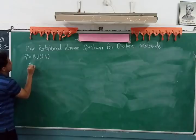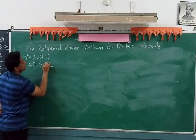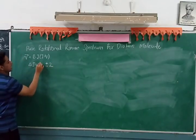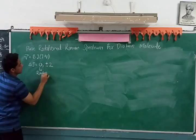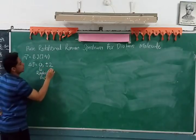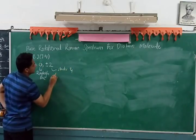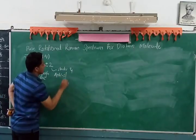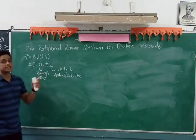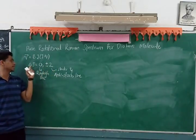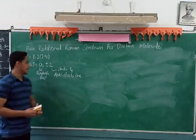The selection rule in Raman spectroscopy is ΔJ = 0 or ±2. ΔJ = 0 corresponds to Rayleigh scattering (Rayleigh lines), and ΔJ = ±2 corresponds to Stokes and anti-Stokes lines. Please note: in rotational Raman spectroscopy, the selection rule is ΔJ = 0 or ±2, unlike ±1 in pure rotational IR/microwave spectroscopy.